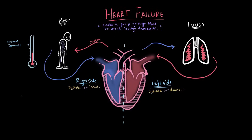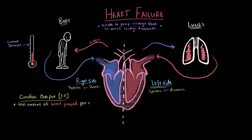An important way to measure the heart's ability to meet the demands of the body is cardiac output — the total amount of blood the heart pumps every minute, usually given in liters per minute, with a normal value around five liters per minute. Cardiac output breaks down into two components: stroke volume, which is the amount of blood pumped out every beat, multiplied by heart rate in beats per minute. Those two multiplied together equals your cardiac output.